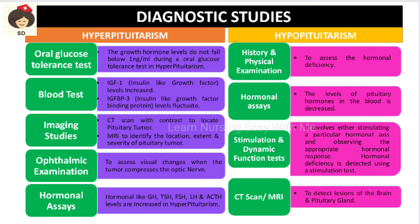Because in hyperpituitarism the tumor can compress the nerves of the eye and cause visual changes, the patient should undergo an ophthalmic examination to assess visual changes and compression of the optic nerve. Hormonal assays including growth hormone, thyroid stimulating hormone, follicle stimulating hormone, luteinizing hormone, and ACTH levels will all be increased in the blood.